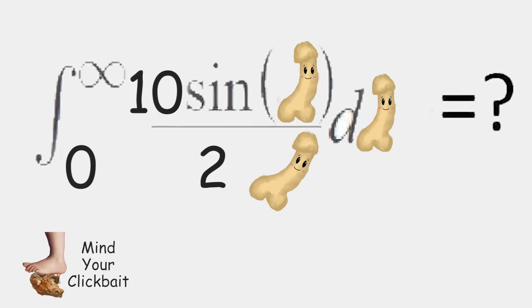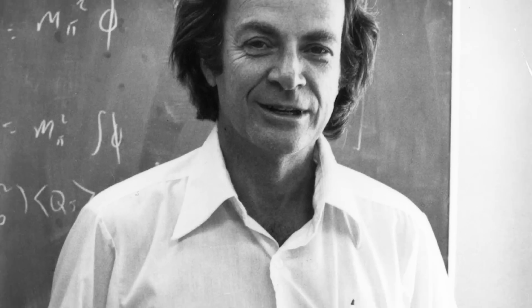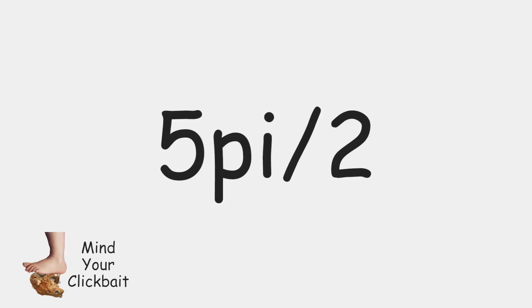Okay, this makes things easier. So we can bring this 10 over 2 being just 5, which is a hamburger, to the outside. And now we can use Feynman's trick to evaluate this integral right here to being 5 times pi over 2.